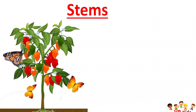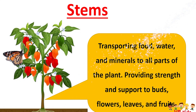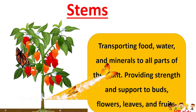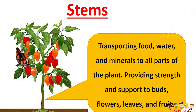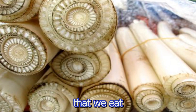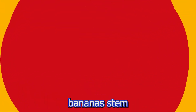Stems are responsible for transporting food, water and minerals to all parts of the plant, and providing strength and support to buds, flowers, leaves and fruits. Some examples of stems that we eat are sugarcane and banana stem.